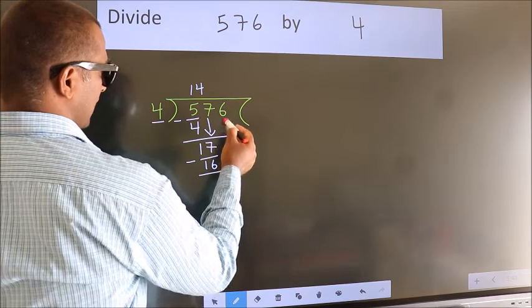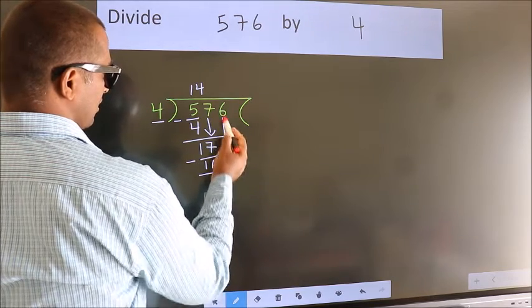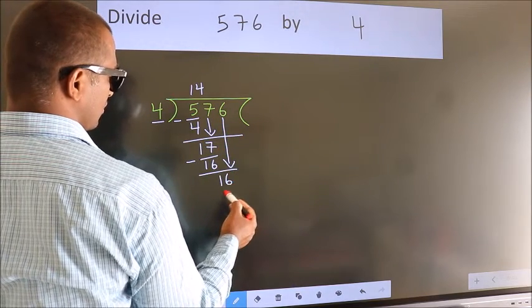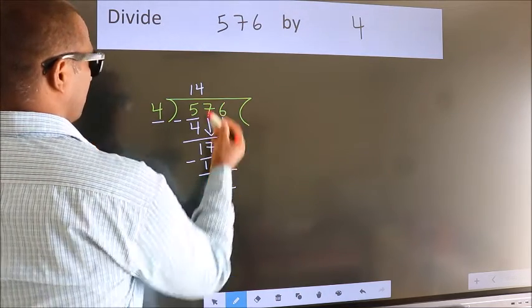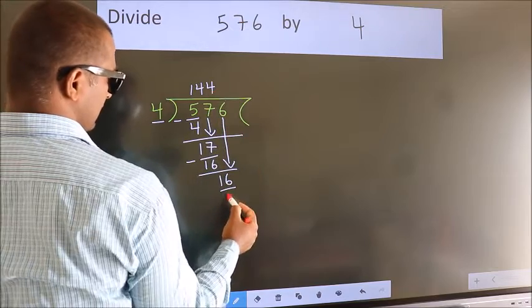After this, bring down the beside number. So 6 down. So 16. When do we get 16? In the 4 times table. 4 fours is 16.